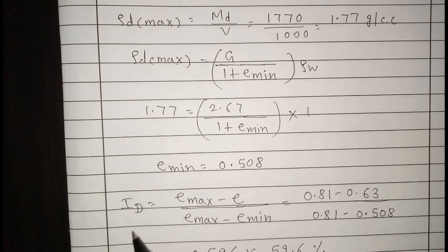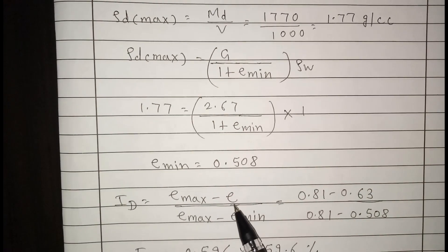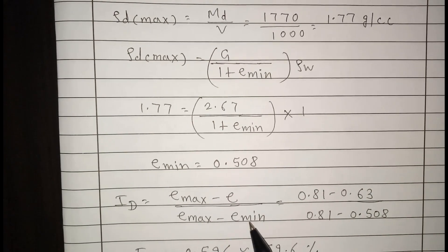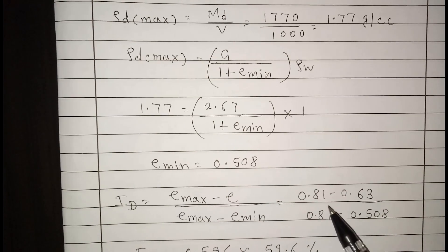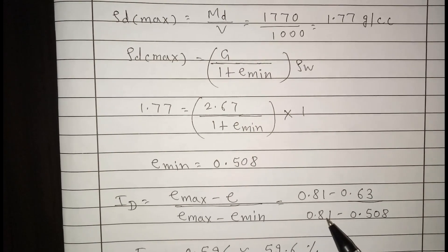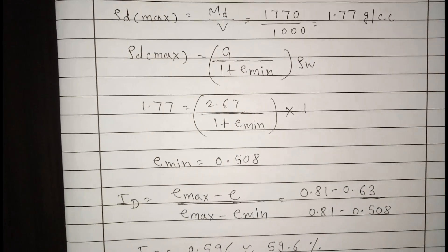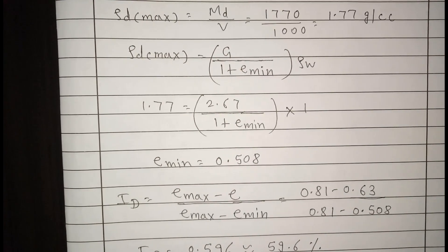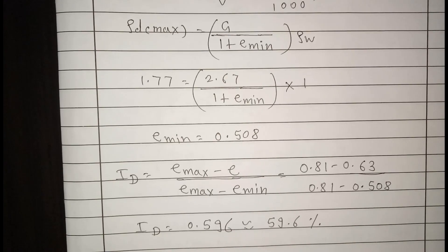The formula for relative density or density index is: ID = (e_max − e) / (e_max − e_min). Substituting the values: ID = (0.81 − 0.63) / (0.81 − 0.508) = 0.596, that means 59.6%. ID is always expressed as a percentage. Thank you.